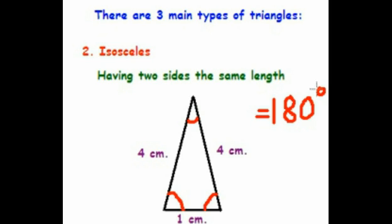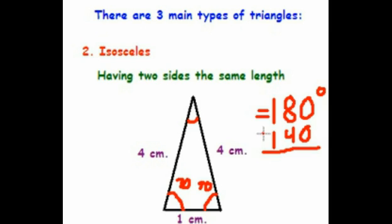We have to do a bit more thinking to figure out the angle measures. For example, if this angle is 70 degrees, and this angle and that angle are the same, then this one is also 70 degrees. So 70 plus 70 is 140, and when we subtract from 180, we get the measure of our final angle, which is 40 degrees. Isosceles triangles will always have two angles that are the same, but they won't always be these specific angle measures.